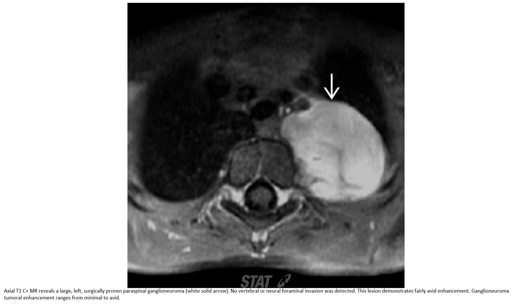T1 post-contrast MRI revealed a large soft tissue mass representing a spinal ganglioneuroma. No vertebral destruction was detected. The lesion demonstrated homogeneous enhancement consistent with ganglioneuroma.